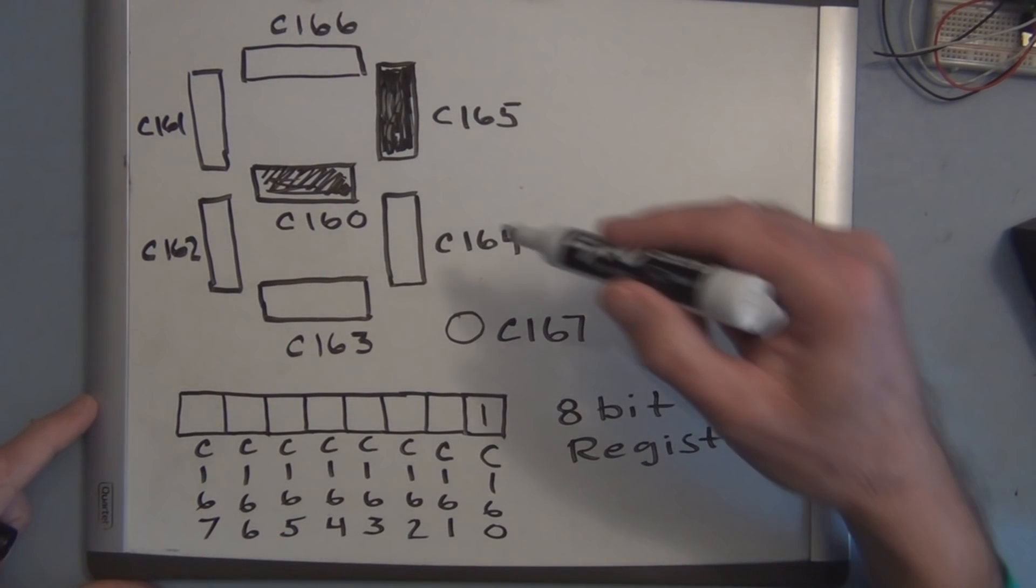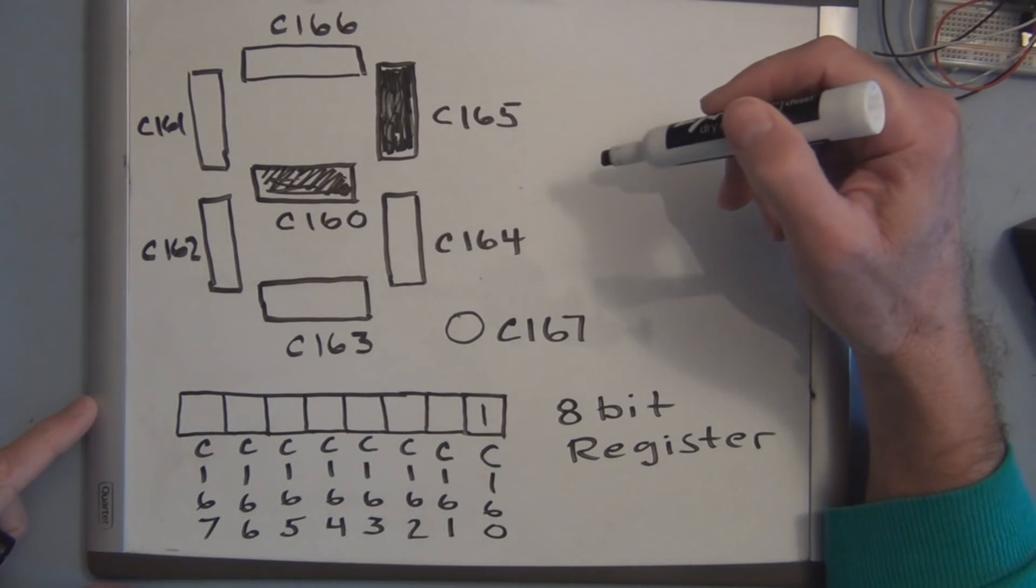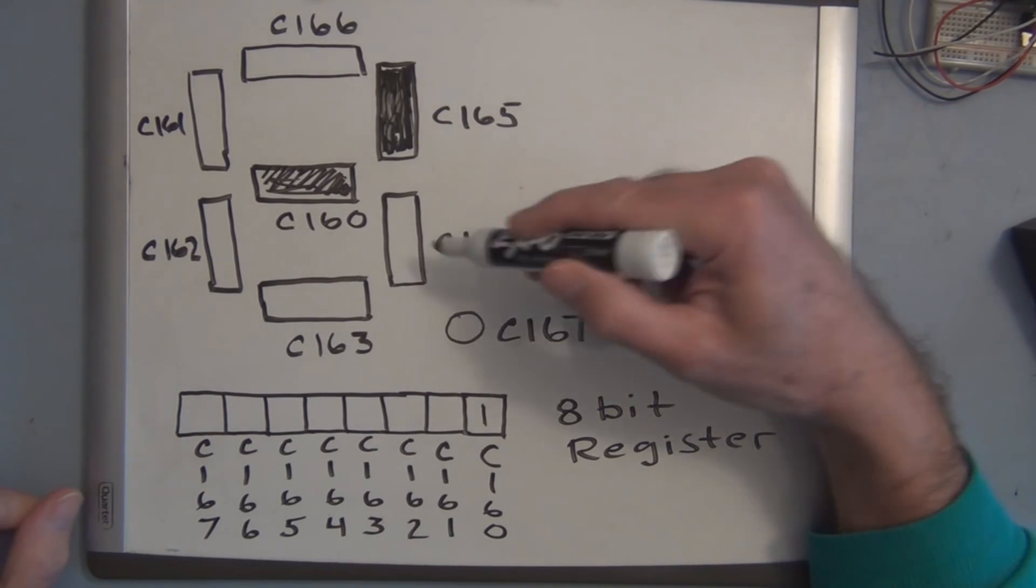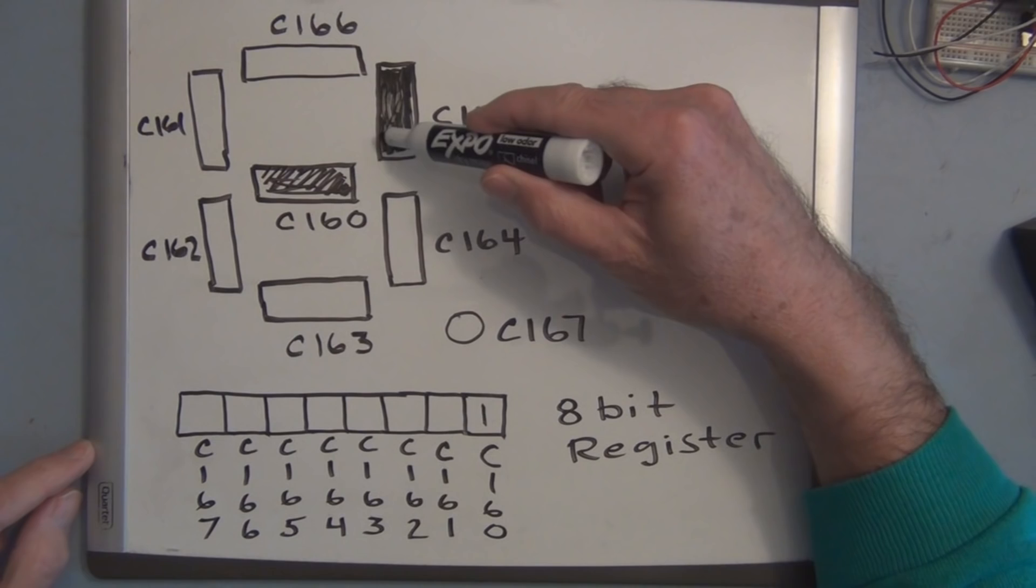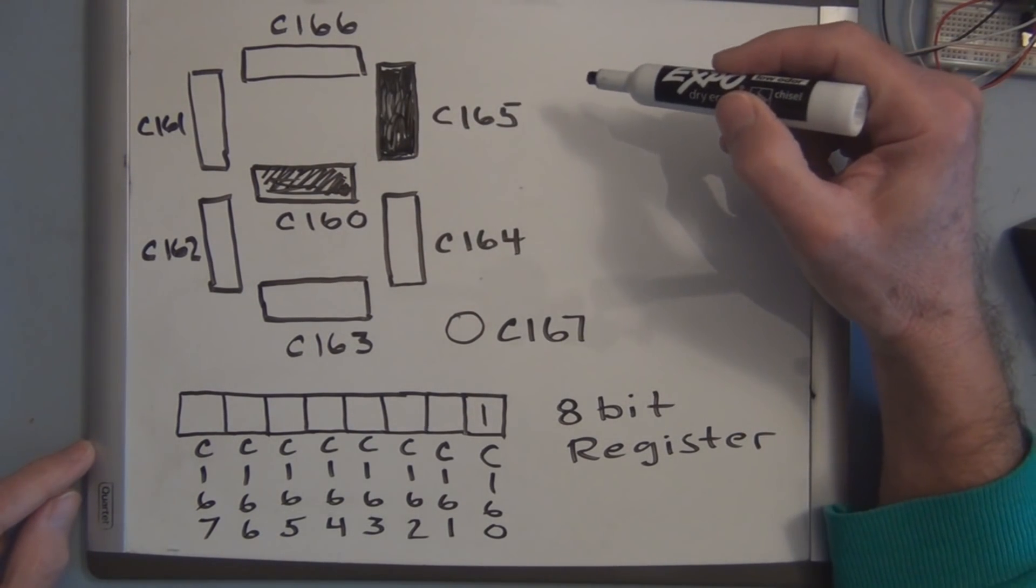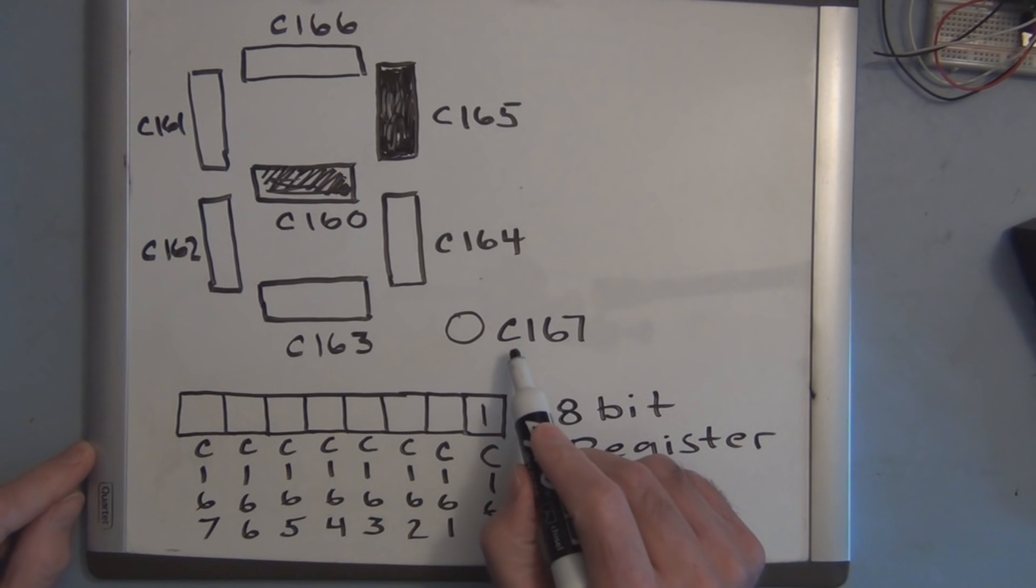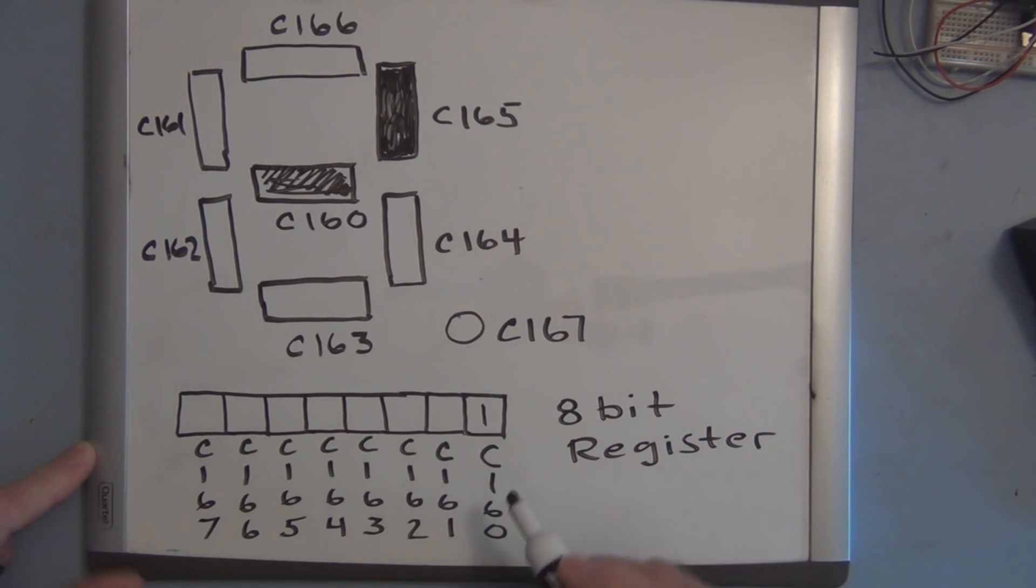So this is what the individual segments look like on the eight-segment LED display. This is one of the displays, and each one of these segments is tied to a location in memory. So you can see here the memory associated with each of these segments.